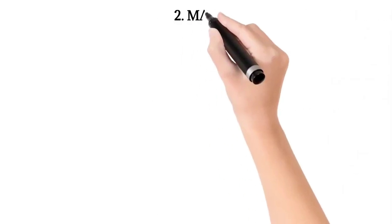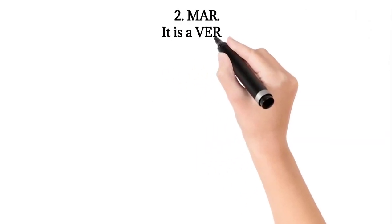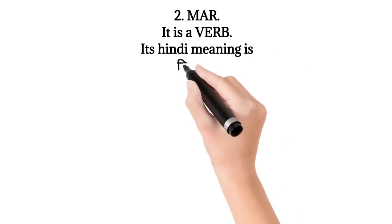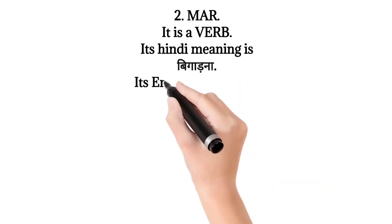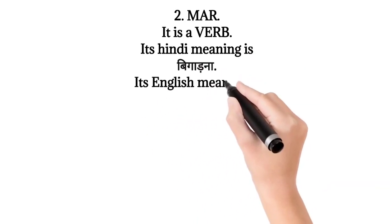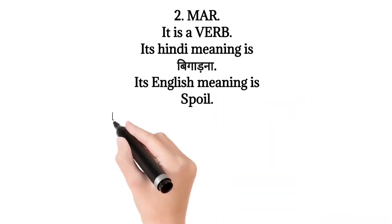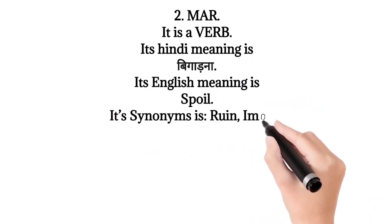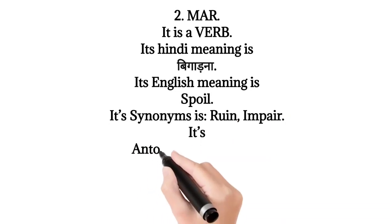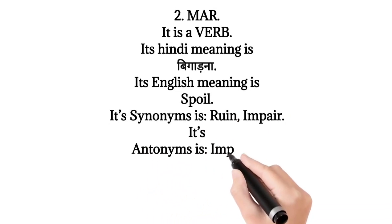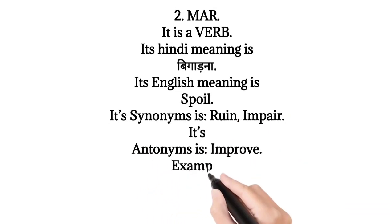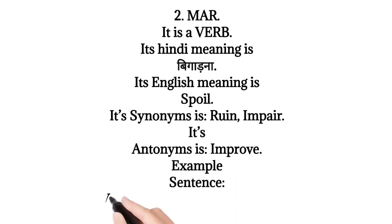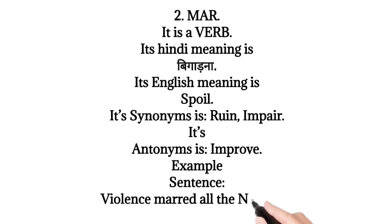2. Mar — it is a verb. Its Hindi meaning is 'bigarna'. Its English meaning is 'spoil'. Its synonyms are ruin, impair. Its antonym is improve. Example sentence: Violence marred all the new year celebrations.